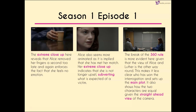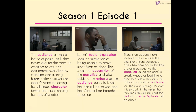Now the camera has swung all the way around to show that Luther has more power, and also indicates that the two characters are equal, given that they're looking at each other and the camera has no angle. The audience also witness this battle of power because Luther moves around the room, attempting to exert his dominance over Alice by standing and making himself taller — but she doesn't react, showing she's not only villainous but further implying her lack of emotion. Luther's facial expression clearly shows his frustration at being unable to prove what Alice has done.